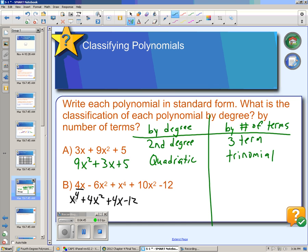So there it is in standard form. Now, if we're classifying by degree, this is a fourth degree, because the highest exponent is 4 here. And a fourth degree is called a quartic.